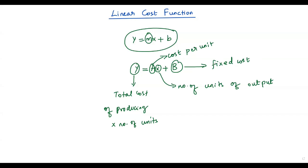Whenever we work a problem on linear cost function, our ultimate aim is to find the values of uppercase A, which refers to cost per unit, and uppercase B, which refers to fixed cost. Once we know those two values, the linear cost function will be complete. Also, the product Ax refers to variable cost, while B refers to fixed cost.